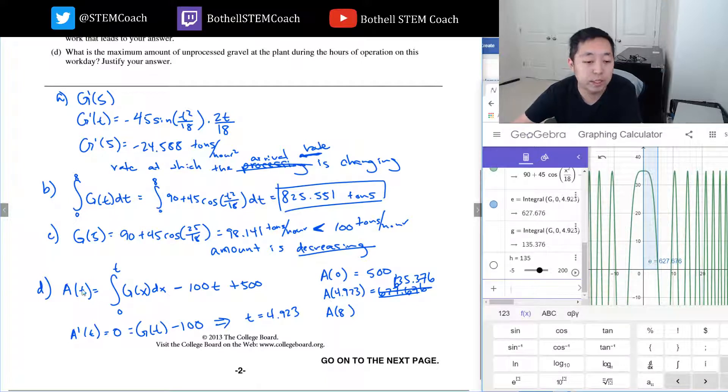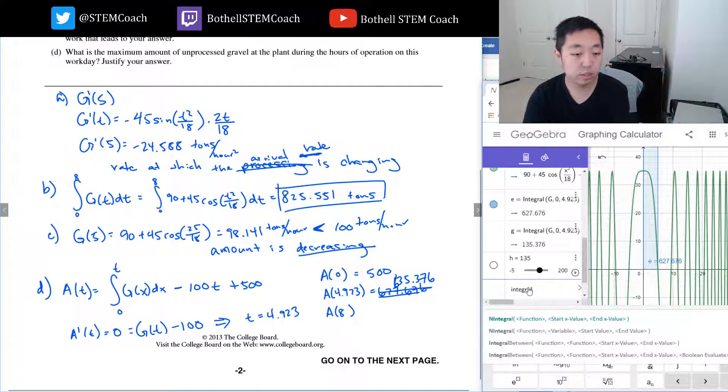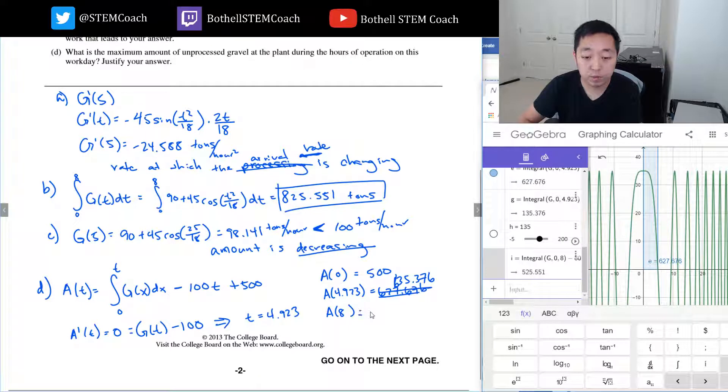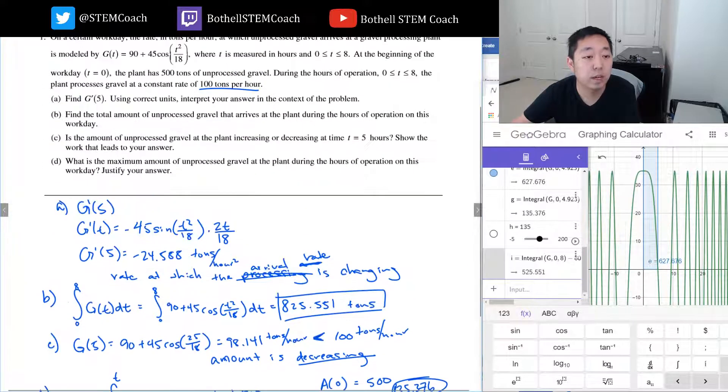So that would be 635.376. So what's happened here is I didn't set this up quite correctly. My equation here, this is the amount that arrives, this is the amount that's processed, and this is the amount we started off with. I started with 500, I got to add in the amount that arrived, I got to subtract the amount that leaves. So A(0) is 500, and then I got to do A(8), which is 525.551. So this is the maximum amount at that time, 635.376.